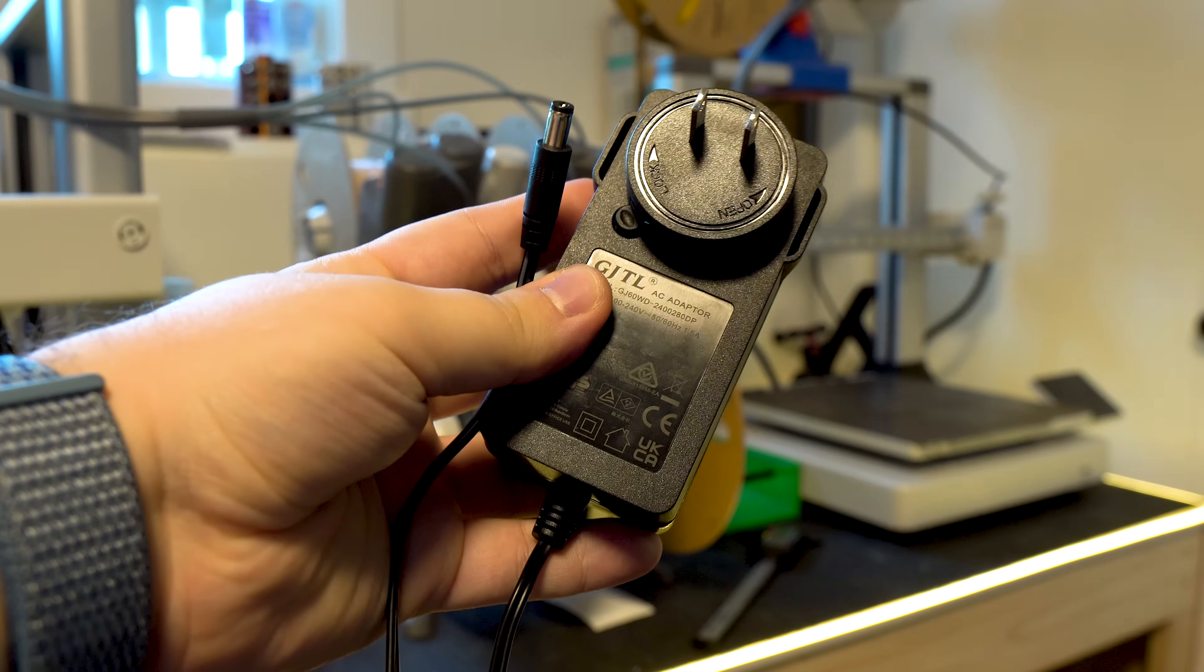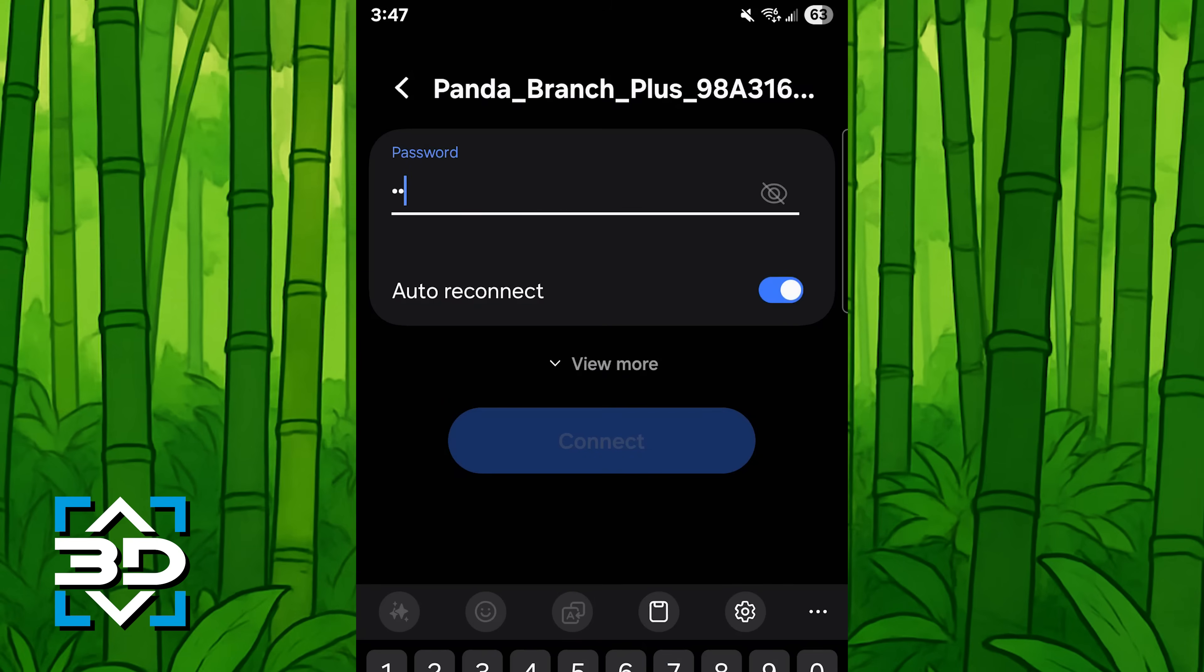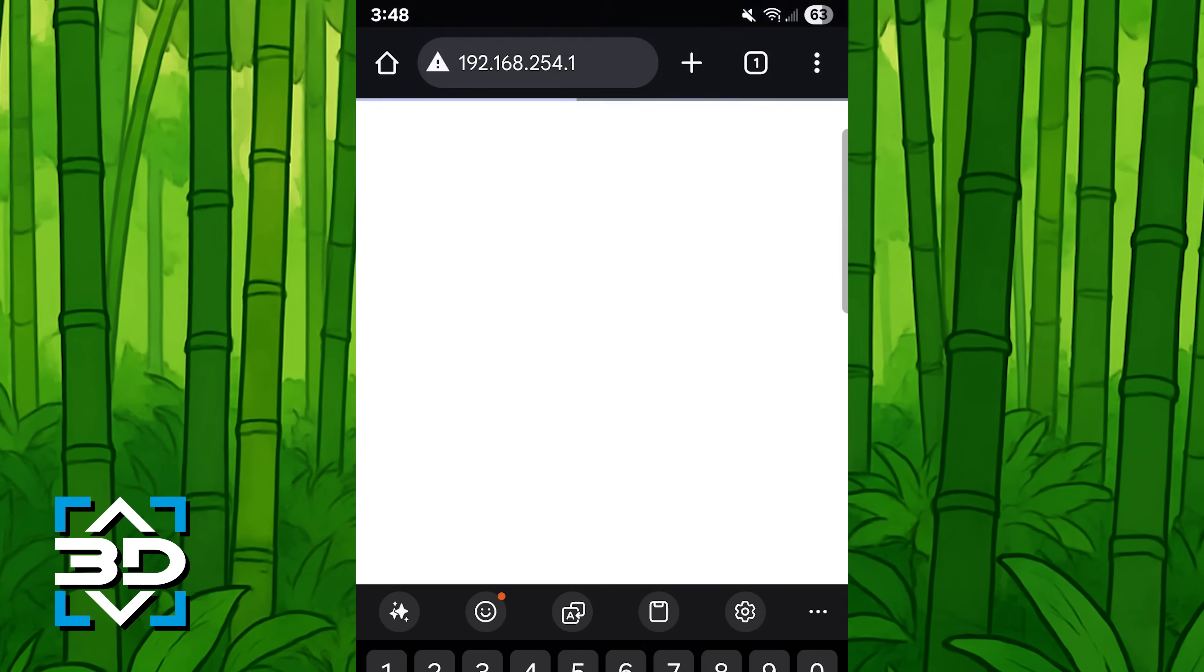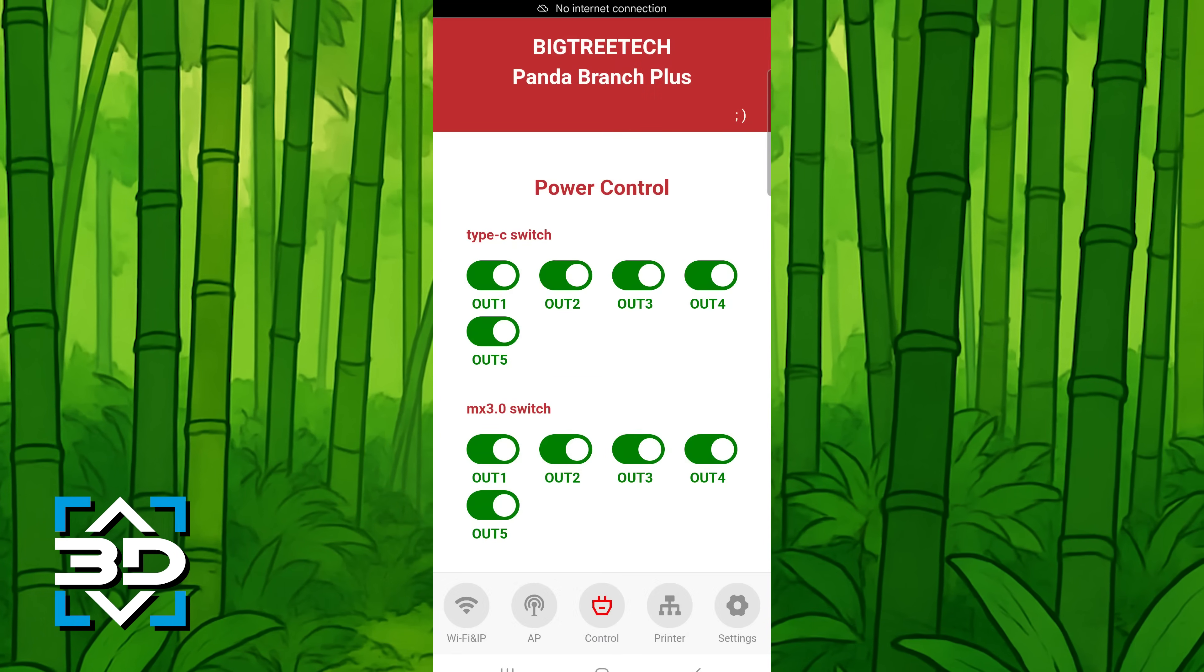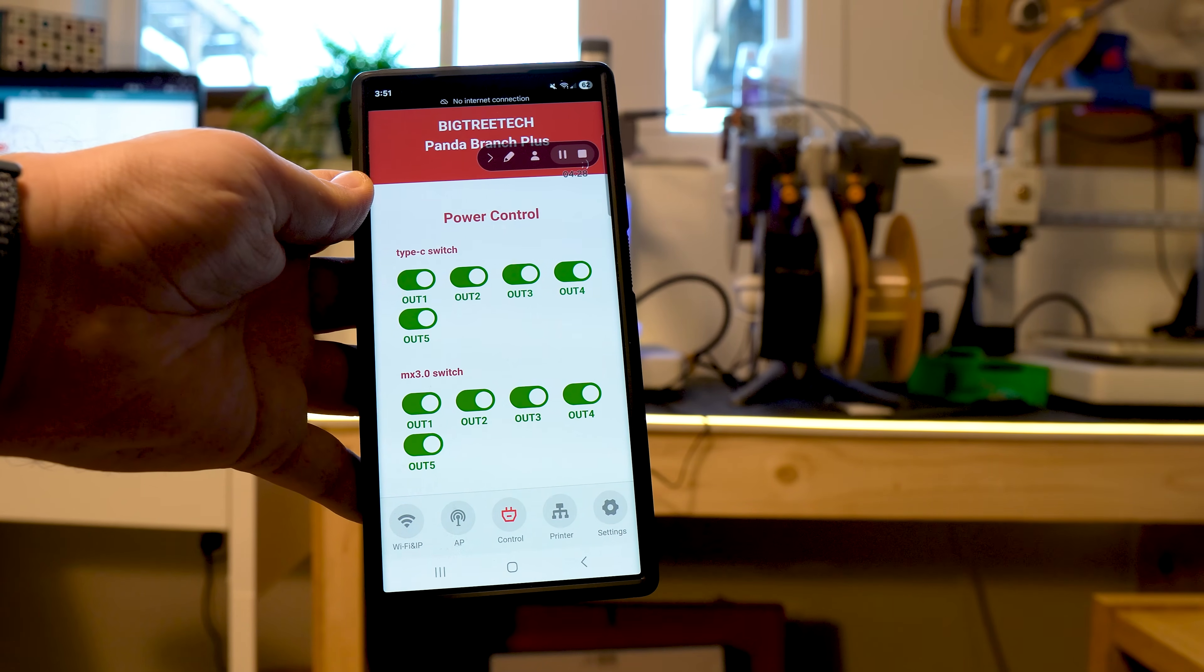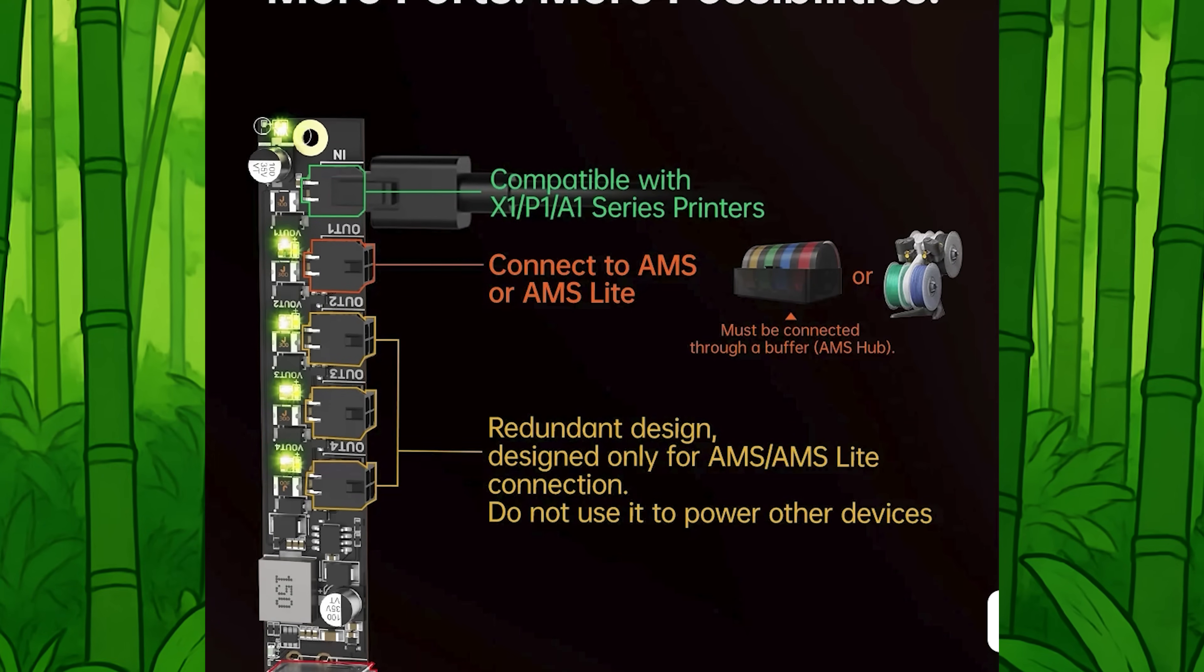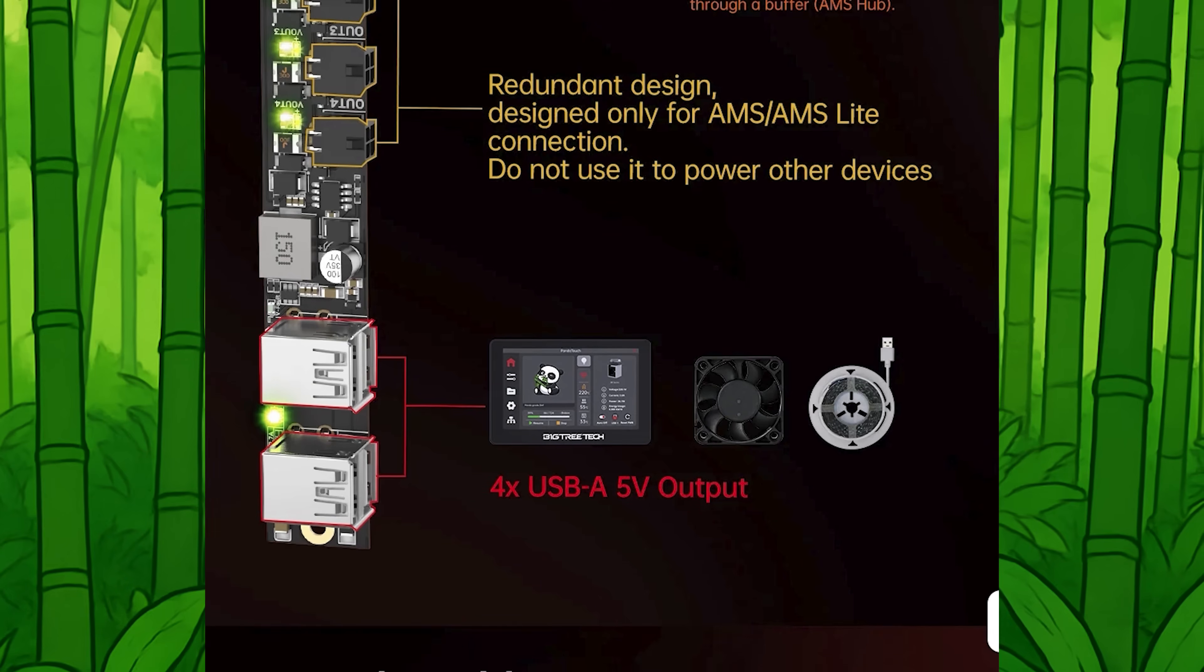Now let's power on the device and access the web UI. Here you can see all ports are online and using your phone or a computer, you can remotely turn on or off any device currently plugged into the Panda Branch Plus. One big benefit of having this Panda Branch Plus is that it allows you to expand all sorts of accessories that you want to install for your A1 printer.